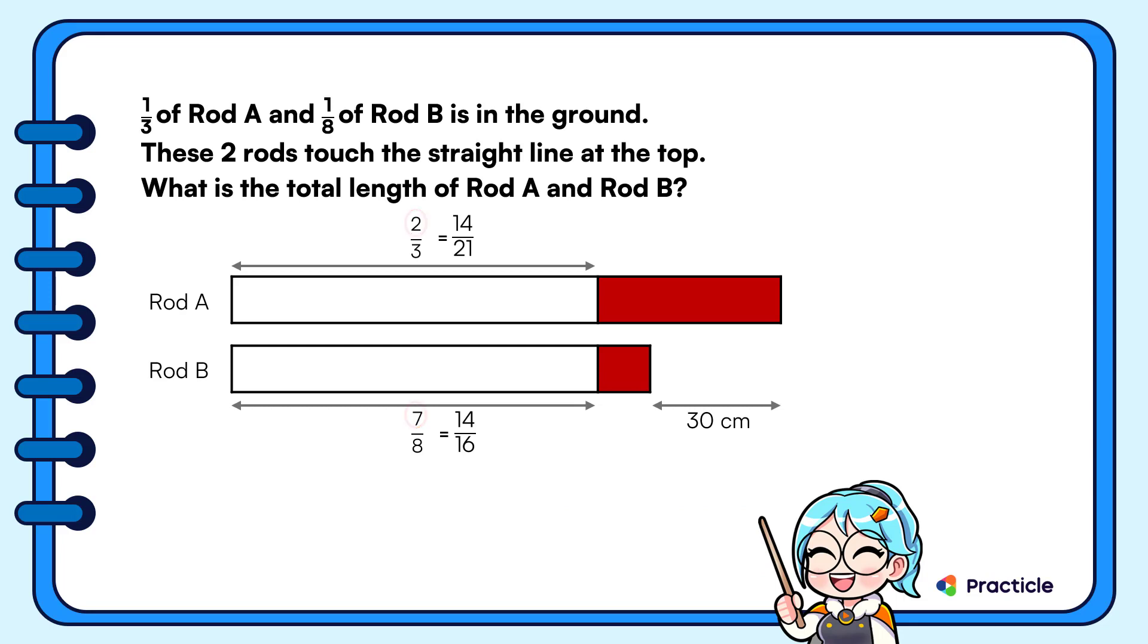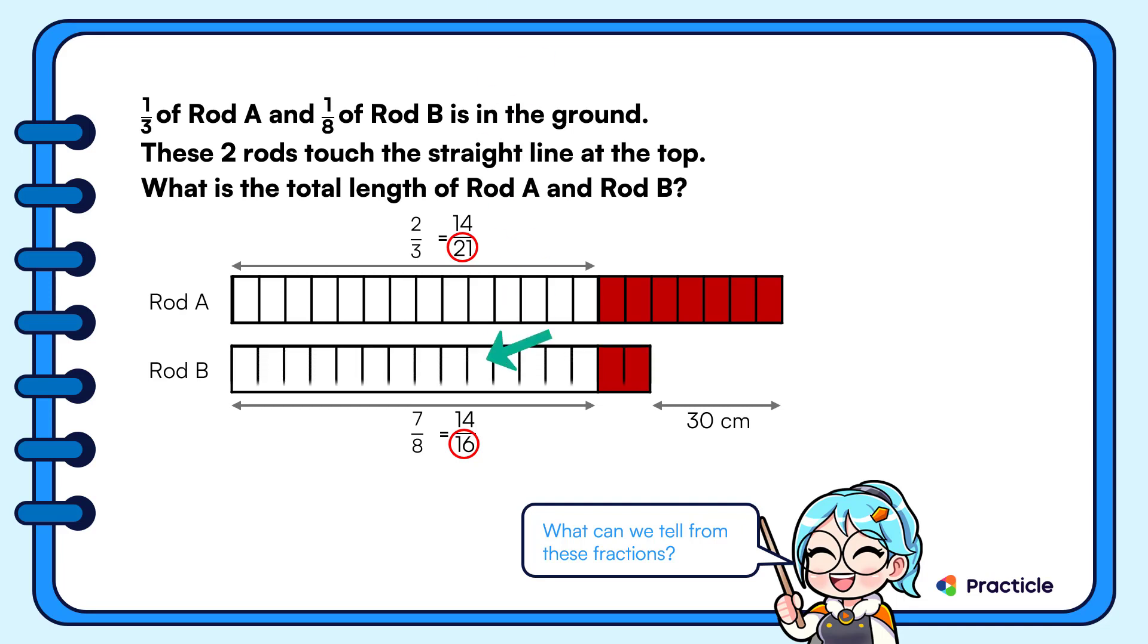Now what can we tell from these fractions? The numerator of each fraction tells us how many parts of each rod are above the ground. Then what about the denominator? The denominator tells us how many units represent the whole length of each rod. So looking at this fraction, we can tell that we can represent the entire length of rod A with 21 units, and we can use 16 units to represent the entire length of rod B.